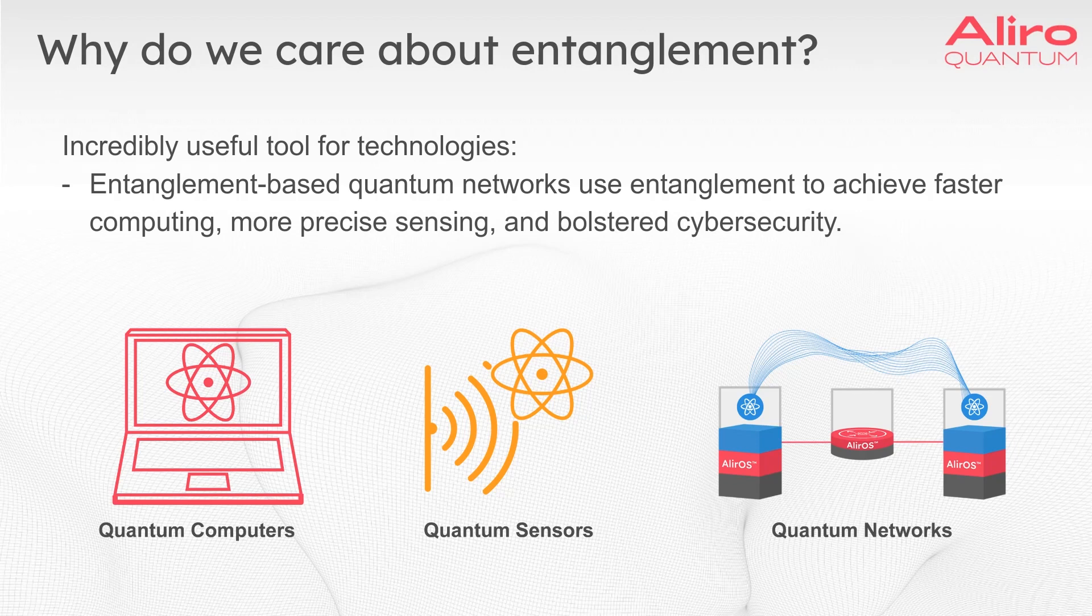Although entanglement has been known since the days of Einstein, they have recently made a big splash in the scientific community. In 2022, three physicists, Aspect, Clauser, and Zeilinger, won a Nobel Prize for demonstrating the existence of and their control over entanglement.